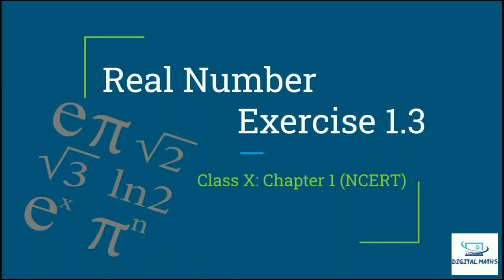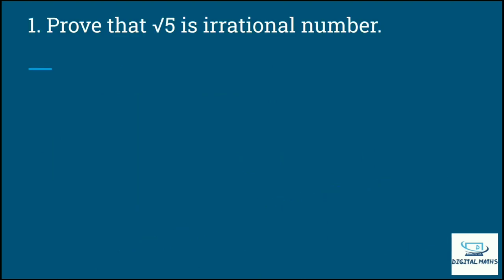Hello students. Digital Maths channel — this is chapter number one of 10th standard, exercise 1.3. This exercise will tell you what was introduced in the introduction chapter. In this exercise, we will cover that if there is a square root of any prime number, it should be proved irrational. Directly coming onto the exercise, the first question is: Prove that root 5 is an irrational number.